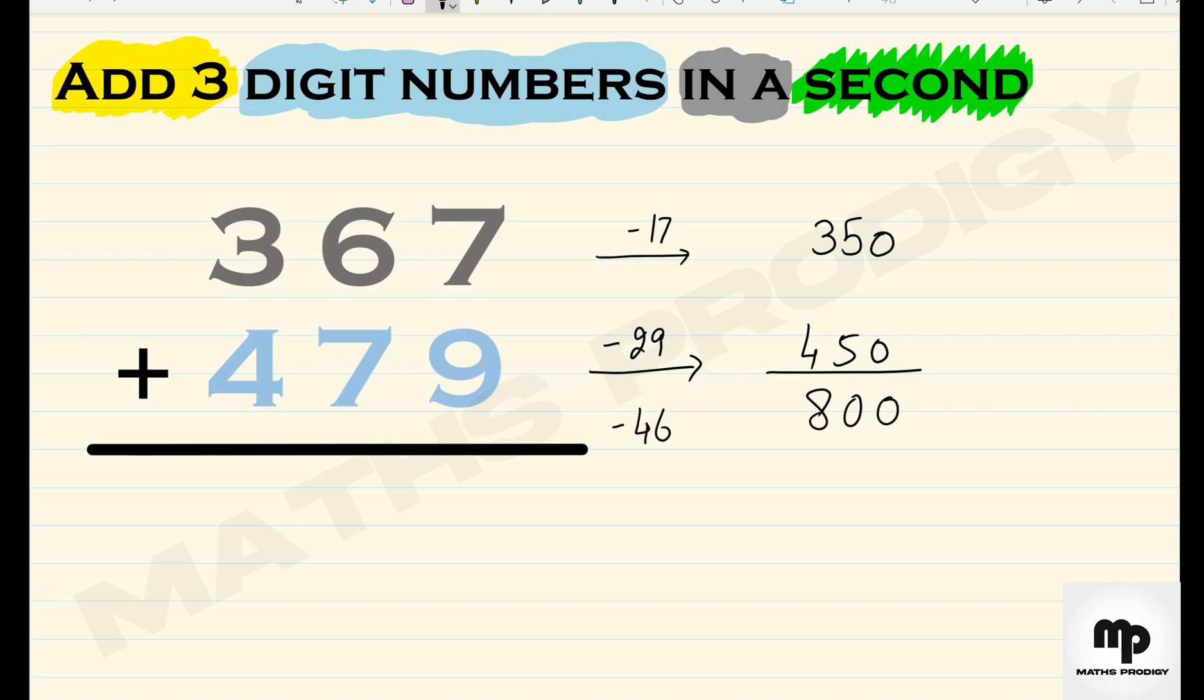The total I thought less is 46, so we have to do the opposite of it. So in the final answer I will add 46, so that will be 846. So you have seen that by using different methods in different ways you can add three digit numbers in a matter of seconds. All depends on your practice.